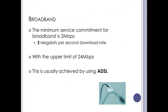So let's look at broadband. The government defined broadband as having a minimum service commitment of 2 megabits per second — that's 2 million bits per second, so 2 million binary zeros or ones per second on a good day — with the upper limit being about 24 megabits. Particularly in North East Scotland, this is usually achieved by using ADSL. Now if you're in other areas of the country, you may actually get cable access, and that's a different technology.